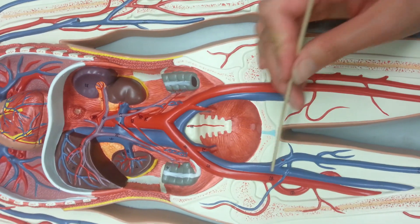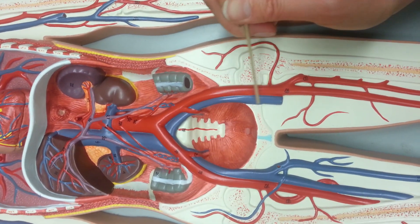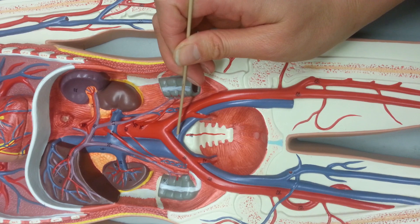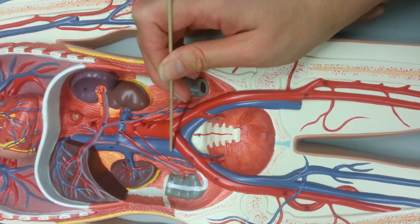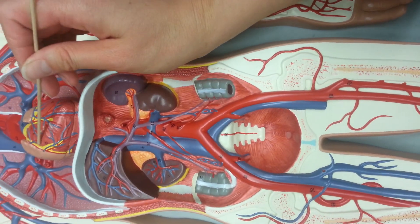And then finally down at the bottom we have our common iliac vein, which also merge into the inferior vena cava to go back up to the heart.